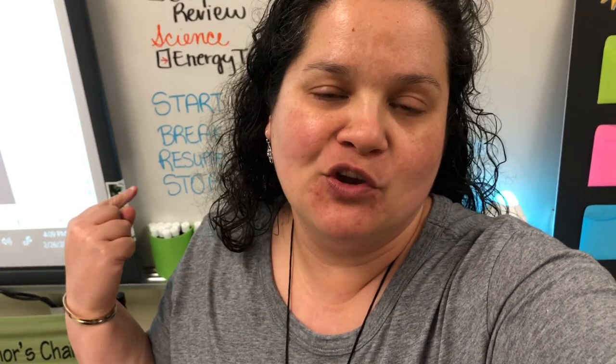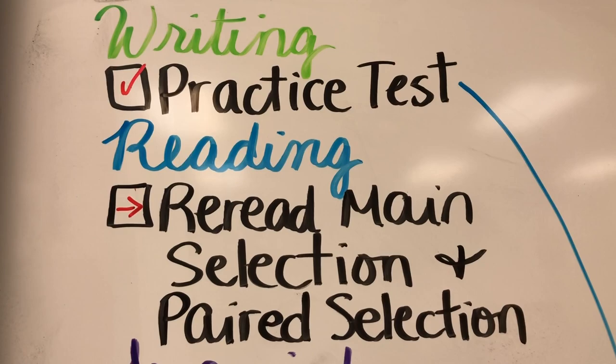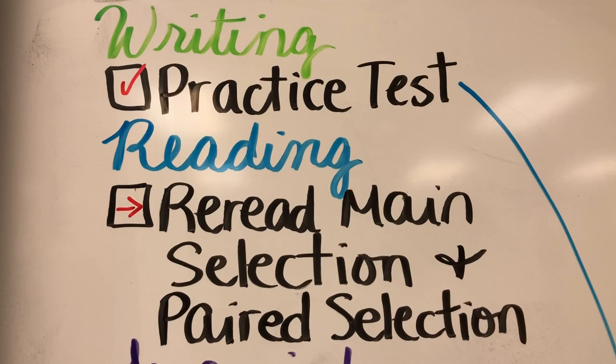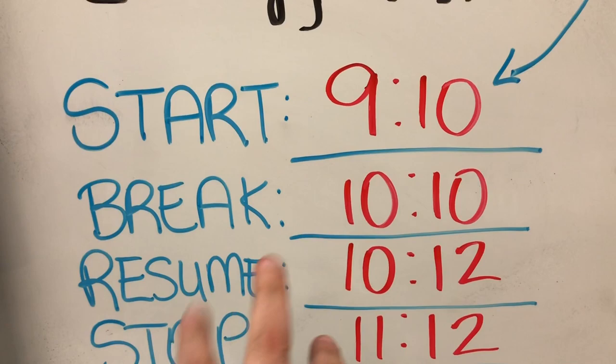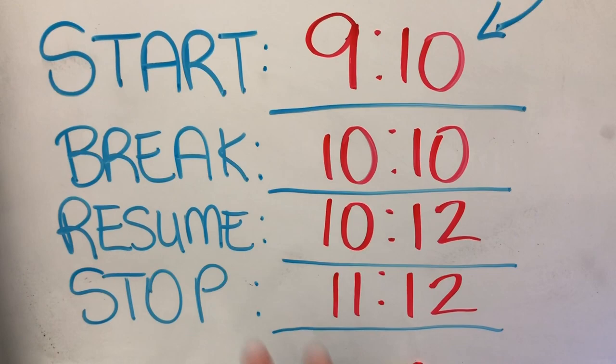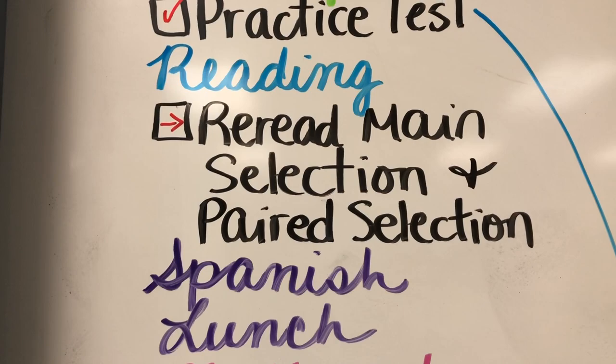Hello and welcome to Wednesday. Let's get right to it and look at this agenda. We started the day with a writing practice test, which I had hoped would let us move on to reading afterward — I was being ambitious. But the writing practice test is two hours long and we needed to start at 9:10. We took a little break at 10:10, resumed at 10:12 — the break is only for stretching — then we ended at 11:12 and our lunch is at 11:30. So we moved reading to tomorrow. Spanish was canceled, so I was happy because we could use that time.